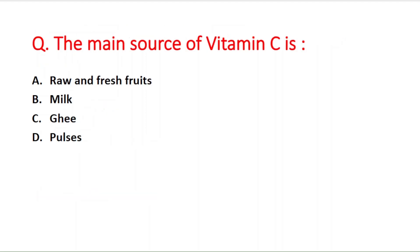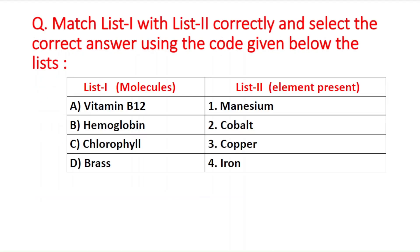Next question: the main source of vitamin C is — option A is raw and fresh fruits, B is milk, C is ghee, D is pulses. The right answer is option A — raw and fresh fruits.